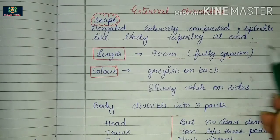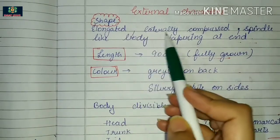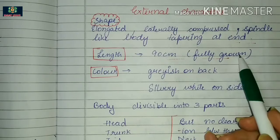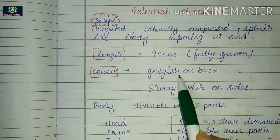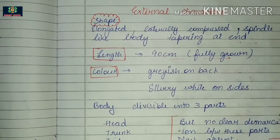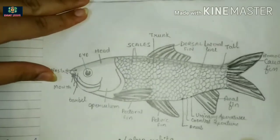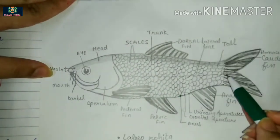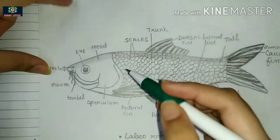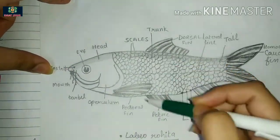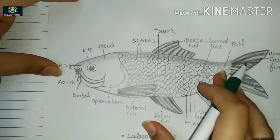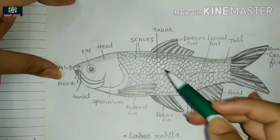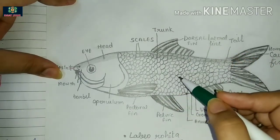Regarding external characters: the body shape is elongated, laterally compressed, and spindle-like, tapering at both ends. The length is up to 90 cm when fully grown. The color is grayish on the back and silvery white on the lateral sides.